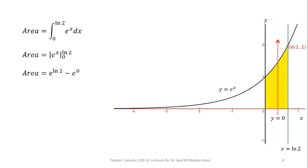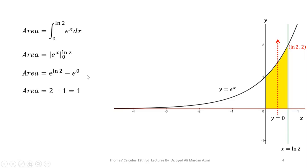Applying the Fundamental Theorem of Calculus again — upper limit minus lower limit — we replace x with ln(2) in the upper limit and x with 0 in the lower limit. Since the exponential and natural log functions are reciprocal, e^(ln 2) = 2. And e^0 = 1. So we have 2 − 1 = 1. Our answer is 1.